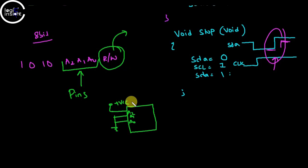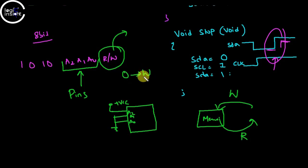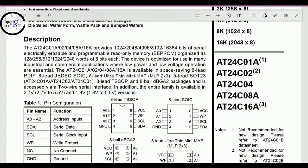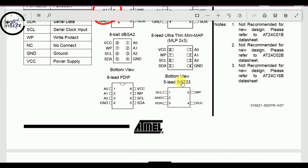The read/write bit specifies whether we want to store or retrieve data from memory. For the write operation the bit is 0, and for read it is 1. Looking at the EEPROM datasheet, we can see the physical pins A0, A1, A2 which we connect to VCC or ground to set the address.